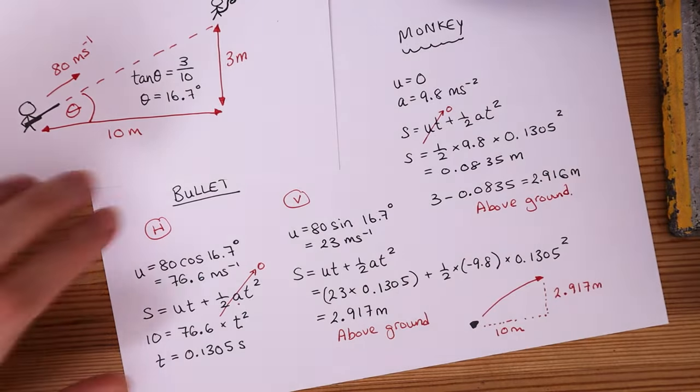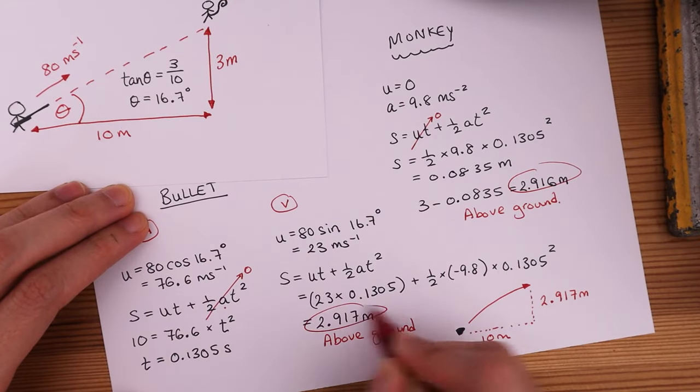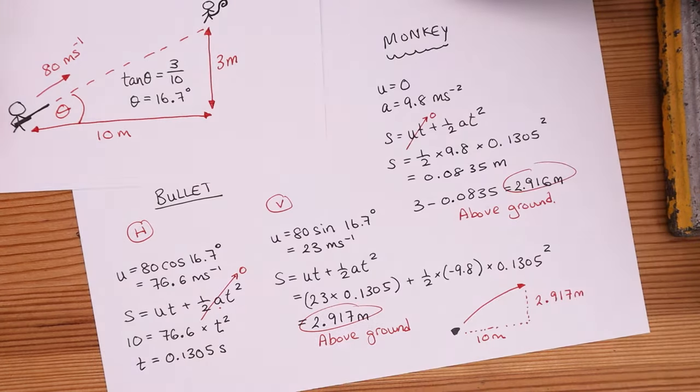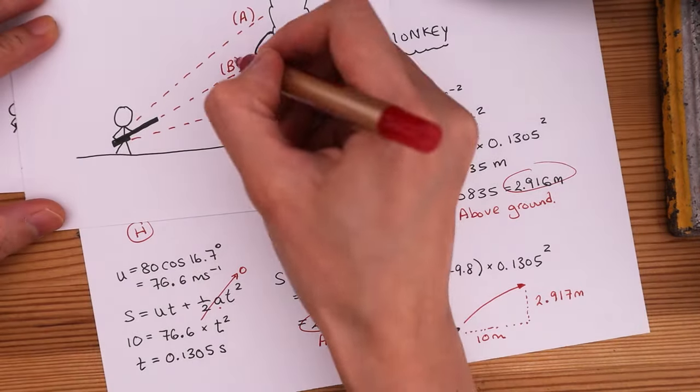So you can see that we have arrived at approximately the same answer as we have before for the bullet. So this mathematically proves that the hunter should be aiming at the monkey when he pulls the trigger.